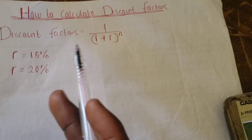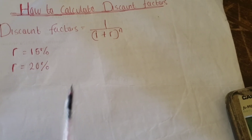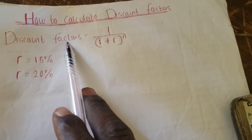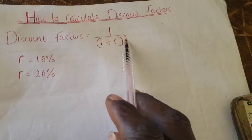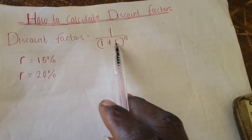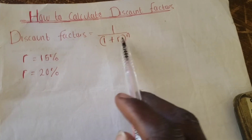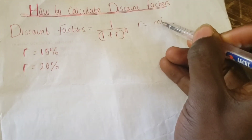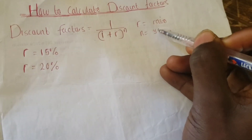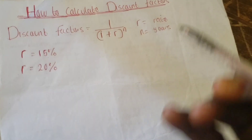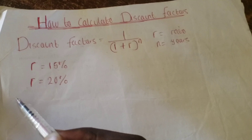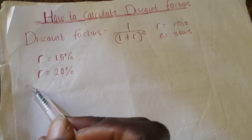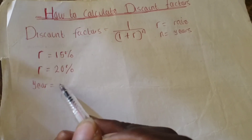Let me explain the parameters we have in this formula. The discount factor equals 1 over (1 + r) raised to the power of n. The r is the rate and n is the years. In the examples we did earlier, we are given that the years is six years.